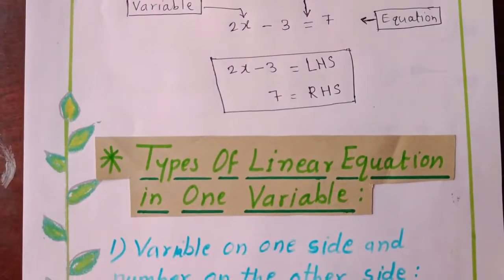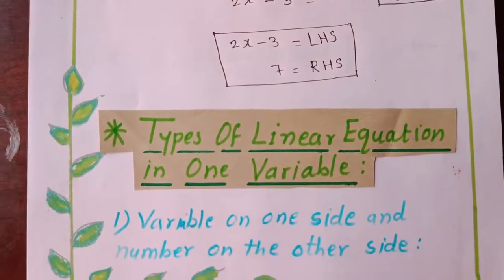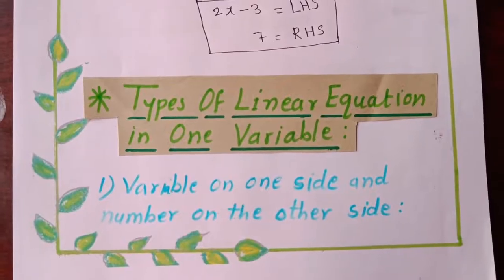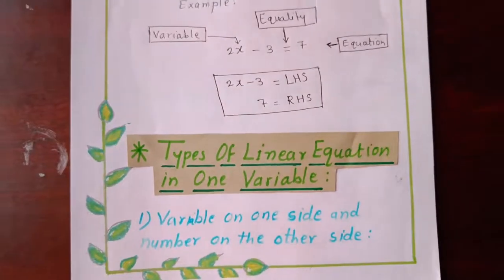After that types of linear equation in one variable. The first type is variable on one side and number on the other side. So let's see.